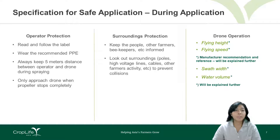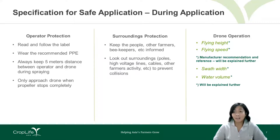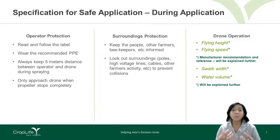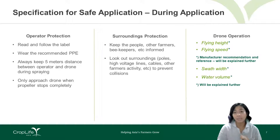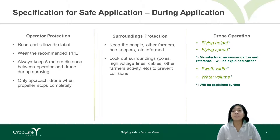During application, pay attention to environmental variables that impact drone operation, including wind speed and flying height. Protect people and the environment by ensuring people and animals do not enter the application area. If they do, stop spraying and do not restart until they have left. A safety helmet is mandatory for the drone operator during application.